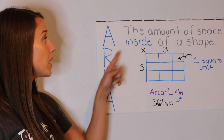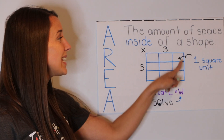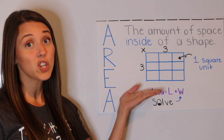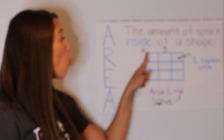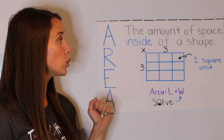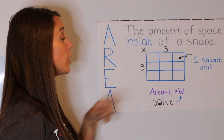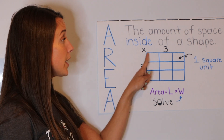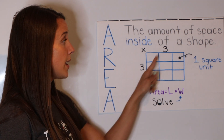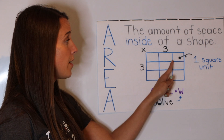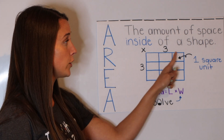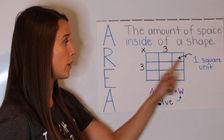Area is the amount of space inside of a shape. When we're looking at my shape, one square represents one square unit. So here, this is one square unit. This is another square unit, and this is another square unit.